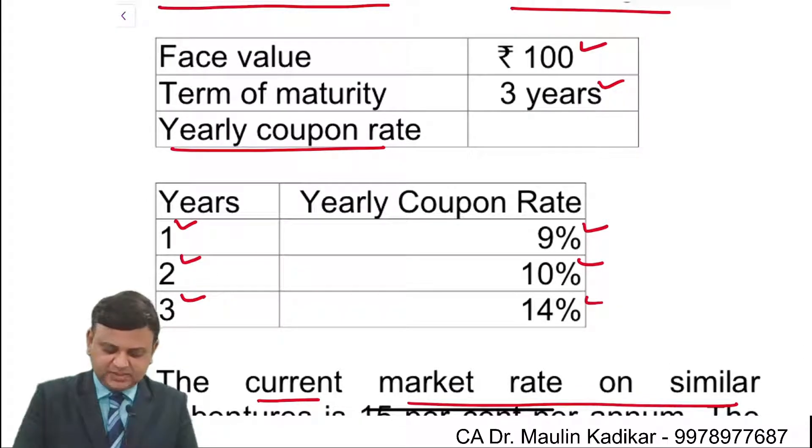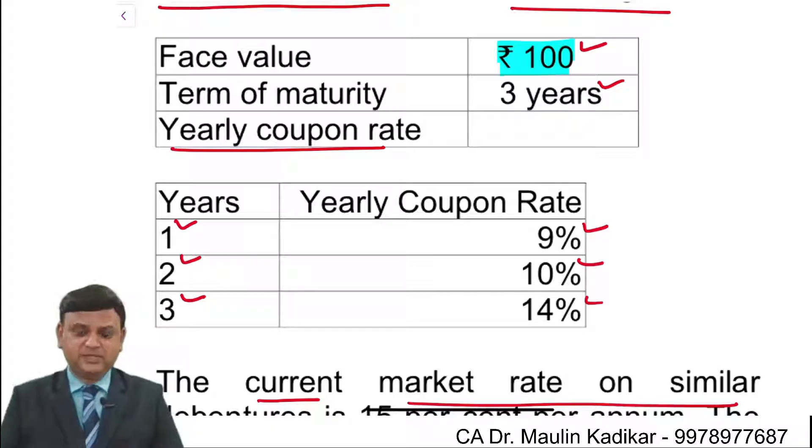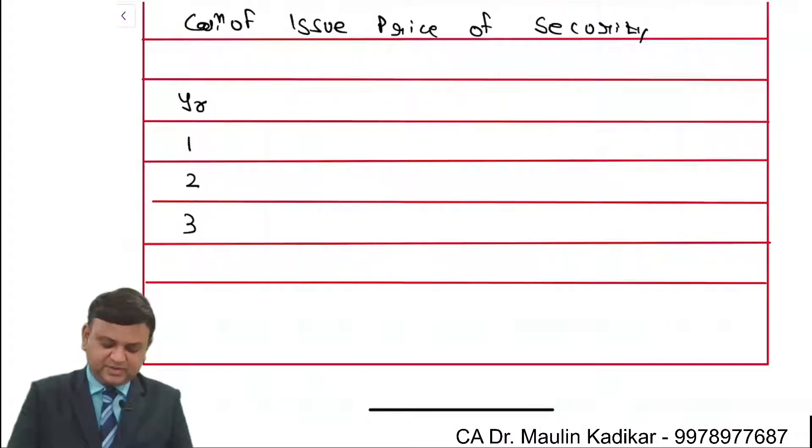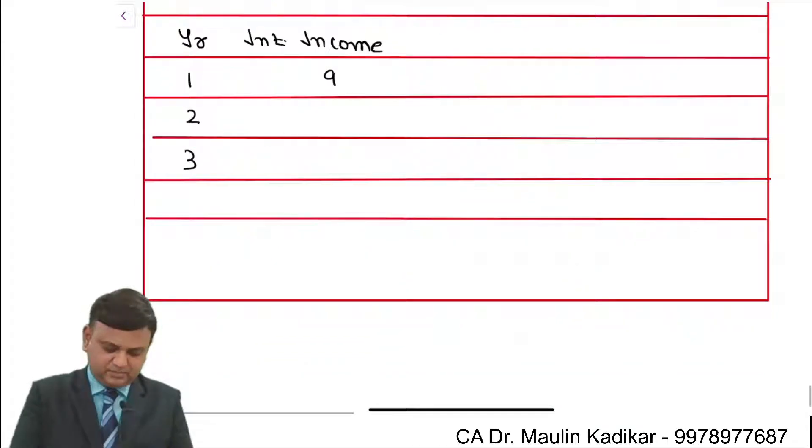Information is given that the face value of the security is 100. Rate of interest is 9% in the 1st year. So what will happen? Investor will receive the interest income of Rs. 9 in the 1st year. So it is 100 into 9%.